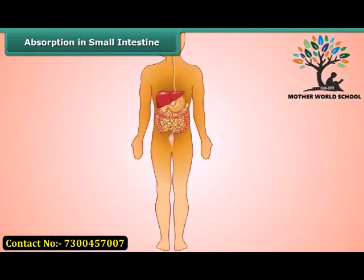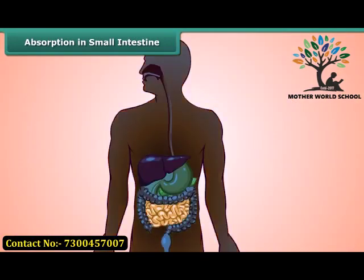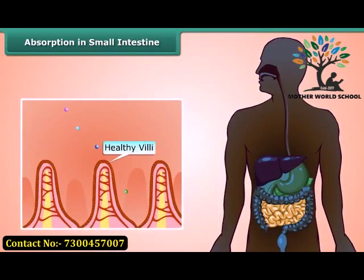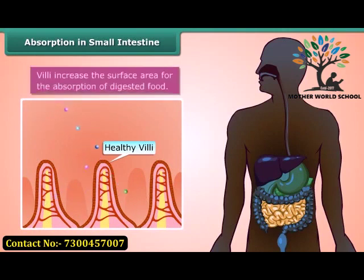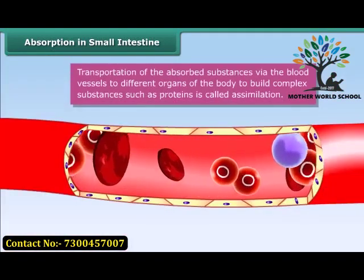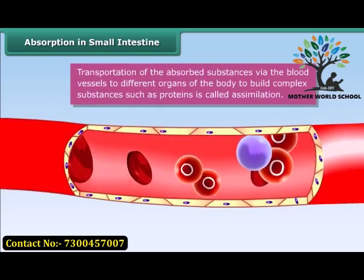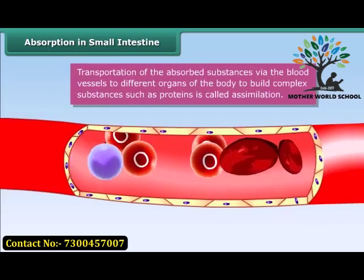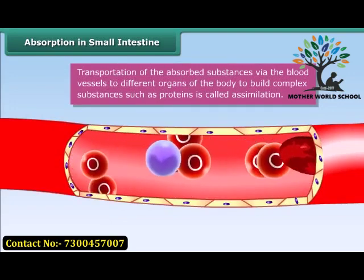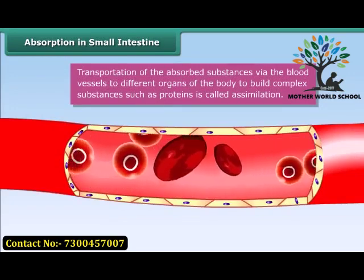There are tiny finger-like structures called villi lining the inside of the small intestine. Villi increase the surface area for absorption of digested food. The absorbed substances are transported by blood vessels to different organs of the body, where they are used to build complex substances such as proteins. This is called assimilation.